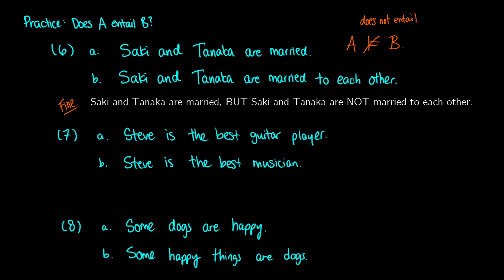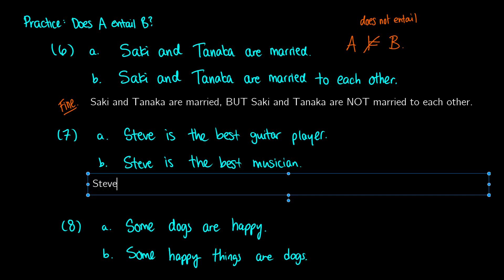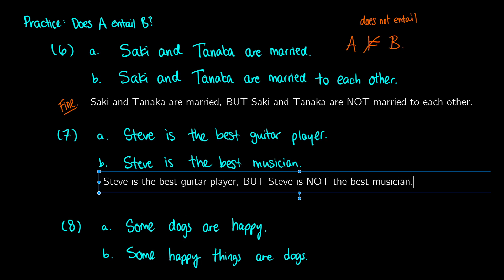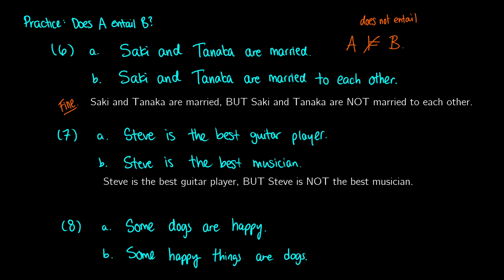Next: 'Steve is the best guitar player' — does that entail 'Steve is the best musician'? Let's apply the test: 'Steve is the best guitar player, but Steve is NOT the best musician.' Is this a contradiction? No — he could be the best guitar player but not the best musician overall; he's the best in a smaller domain. So A does not entail B in this case.